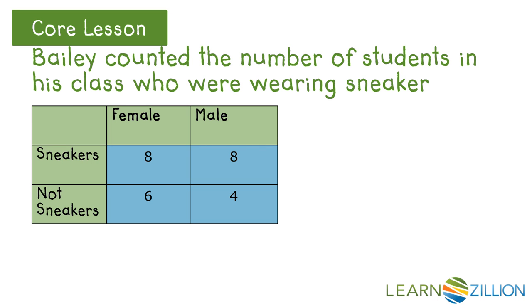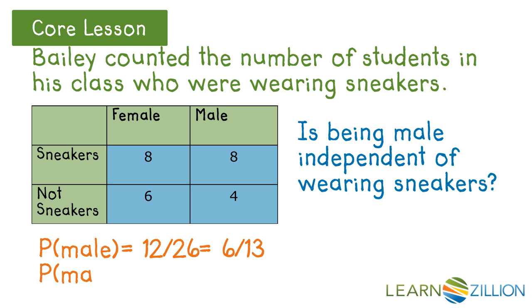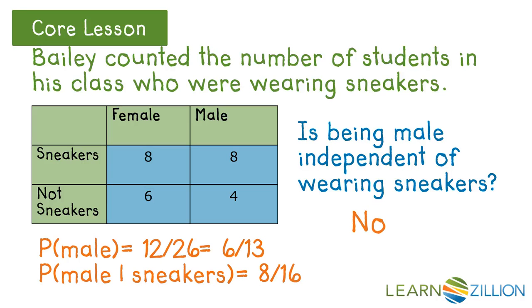Bailey counted the number of students in his class who were wearing sneakers. Is being male independent of wearing sneakers? The probability of being male is 12 out of 26, since there are 12 boys out of 26 students. The probability of being male given wearing sneakers: there are 16 students who wear sneakers, 8 of whom are male — that's 8 over 16. These two fractions are not equal, which means the events are not independent.